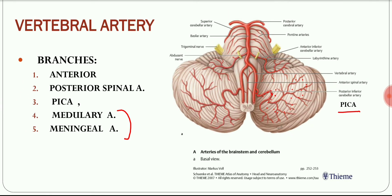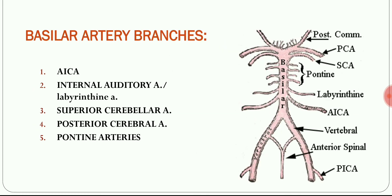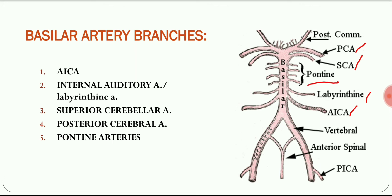The basilar artery is formed by the union of the two vertebral arteries, and it gives rise to five branches: first, AICA or anterior inferior cerebellar artery; second, the internal auditory artery or labyrinthine artery; third, the superior cerebellar artery; fourth, the posterior cerebral artery; and fifth, small pontine arteries.